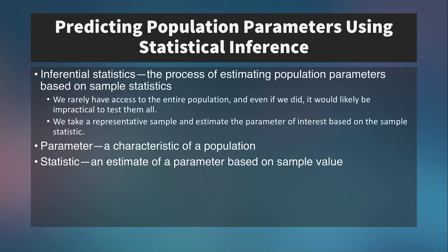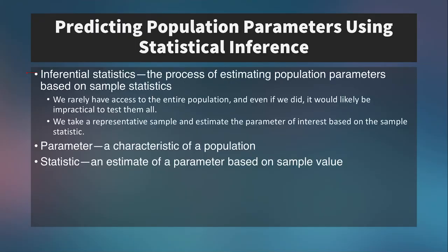The statistic is what we calculate on the sample, and the parameter is what we infer regarding the population. So the mean or standard deviation of a population is a population parameter. But when you take the mean or standard deviation of a sample, that's referred to as a statistic. A parameter is a characteristic of a population, while a statistic is an estimate of a parameter based on a sample value.